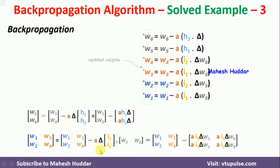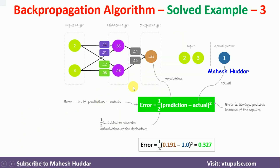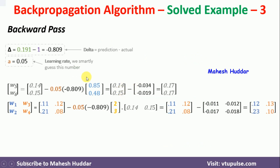Once you put all the values into these equations, we get the modified weights. An important point: the delta term is predicted output minus actual output, and A is the learning rate which should be set to a small number. After applying the equations, the updated weights are: W5 is 0.17, W6 is 0.17, and W1, W2, W3, W4 are 0.12, 0.23, 0.13, and 0.10 respectively.